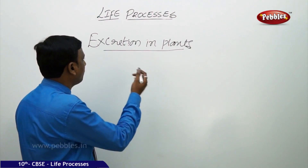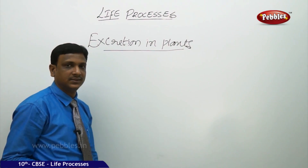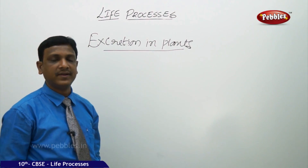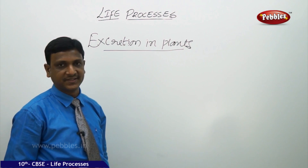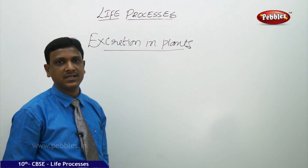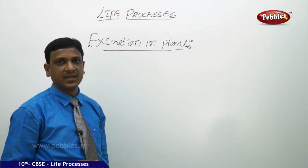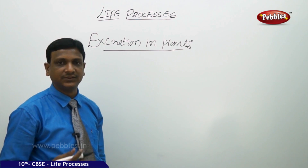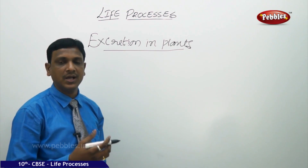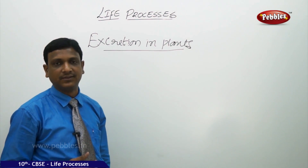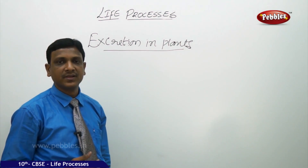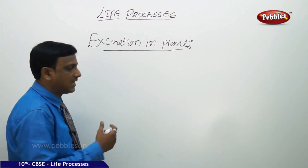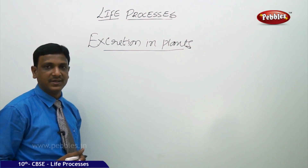Now let us see excretion in plants. Plants do not have any well-developed excretory system and they don't produce the amount of toxins compared to other animals. But even then, they do have some kind of waste materials.